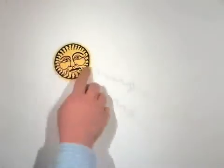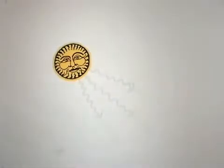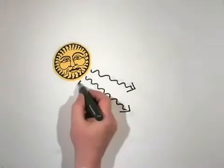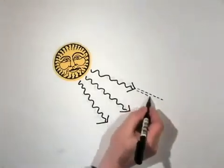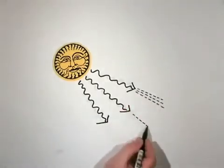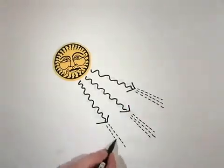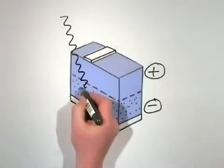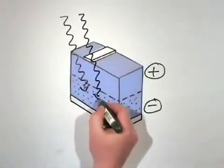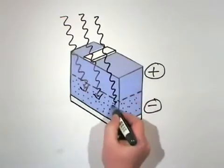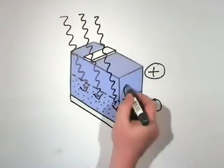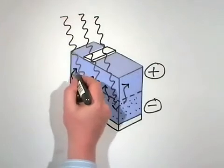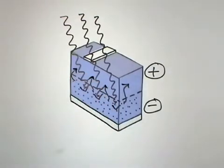Now let's put the PV cell in the sun. Sunlight is made up of streams of particles called photons, which are units of electromagnetic radiation — in other words, a form of energy. When the photons penetrate the silicon wafer, they give loose electrons they encounter extra energy, enough to enable the electrons to move across the electrical field. Electrons begin to flow through the wafer and round the circuit.